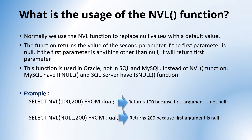What is the usage of the NVL function? Normally we use the NVL function to replace null values with a default value. This function returns the value of the second parameter if the first parameter which we pass is null. If the first parameter is anything other than null, it will return the first parameter only. This function we use in Oracle, not in SQL Server and MySQL. Instead of the NVL function, MySQL has IFNULL and SQL Server has ISNULL function.